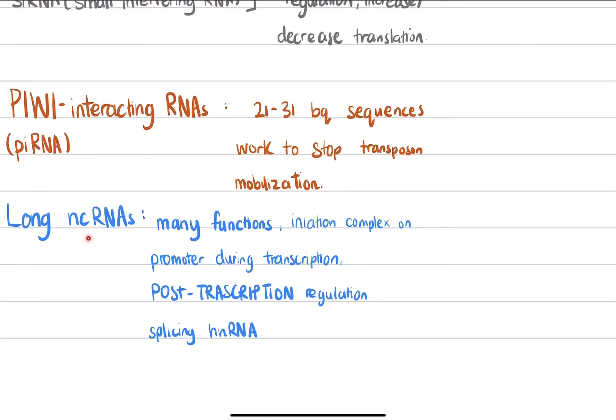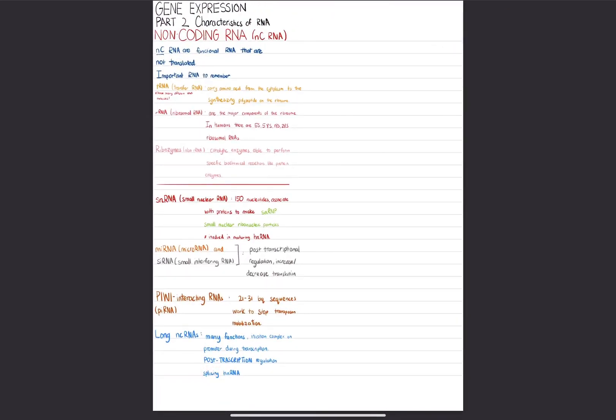Then we have long non-coding RNAs. These have many functions. One example function is initiation complex on promoter during transcription, and post-transcription regulation of splicing heteronuclear RNA. Splicing is our next topic, when we discuss how these immature mRNAs, or heteronuclear RNAs, are converted to mature mRNA, which is then transported to the cytoplasm for translation.